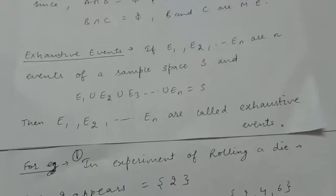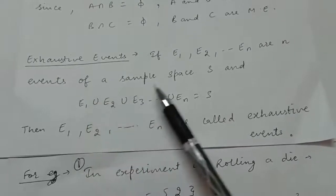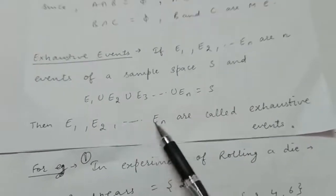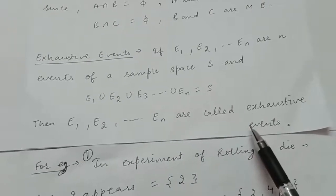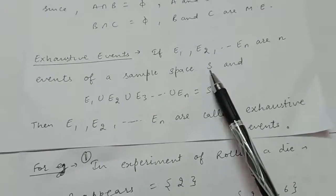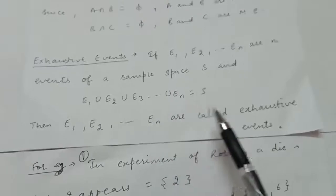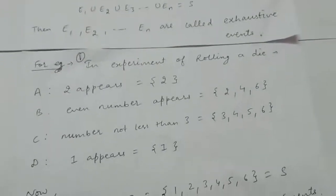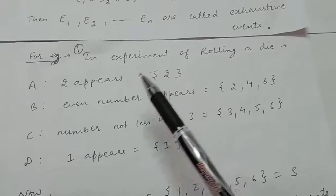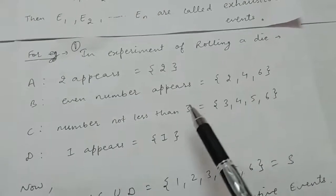The next type are exhaustive events. If E1, E2, up to En are n events of a sample space S such that the union of these events equals S, then we say all these events are exhaustive events. For example, in rolling a die: event A is 2 appears, so A = {2}; event B is an even number appears, so B = {2, 4, 6}.